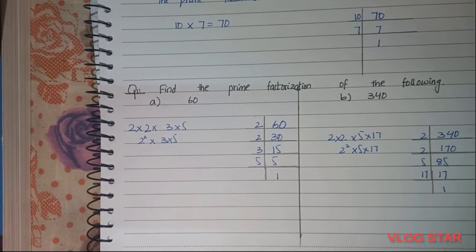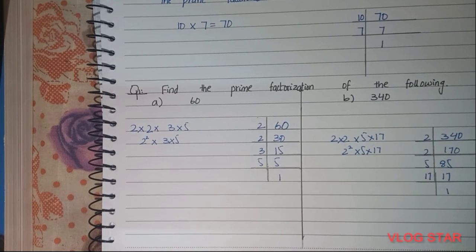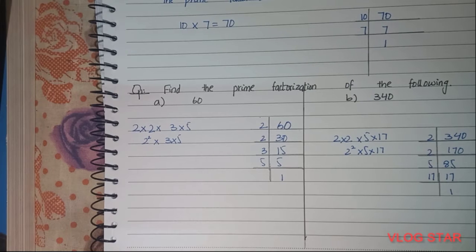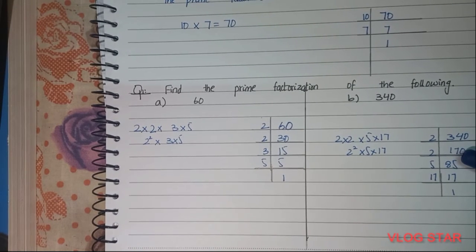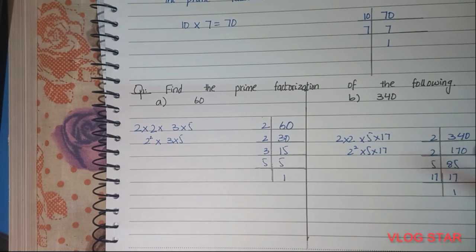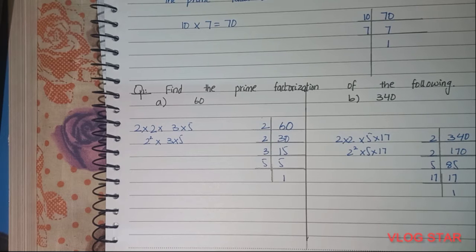Now let's solve part b: 340. To solve this, we first divide by 2 as 340 is an even number. By dividing, we get 170. As 170 is also even, we again divide by 2 and get 85. Oh snap, 85 is not divisible by 2 as it's an odd number.